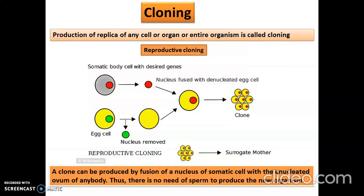Biotechnology is very vast. If we use it in a proper way, it is really a boon to human beings. Then cloning — you must have heard about it. Cloning is the production of a replica of any cell, organ, or the entire organism. Cloning is usually done in the case of animals and plants. For human beings, cloning is not allowed — we have other methods like IVF or surrogacy for that purpose.